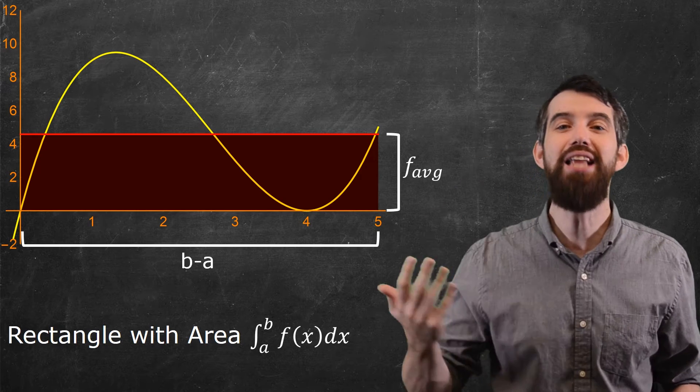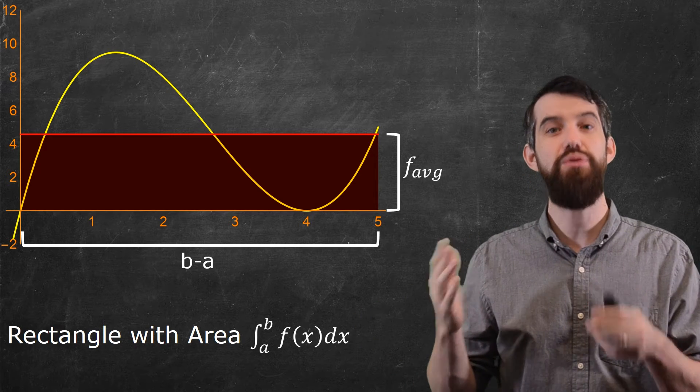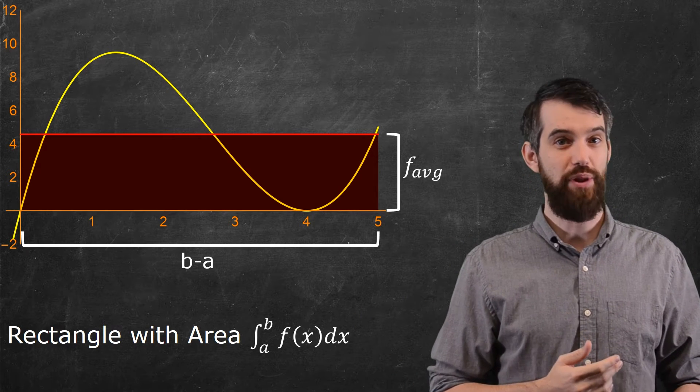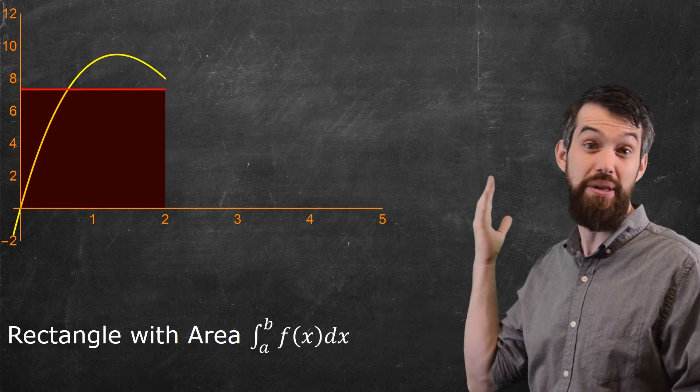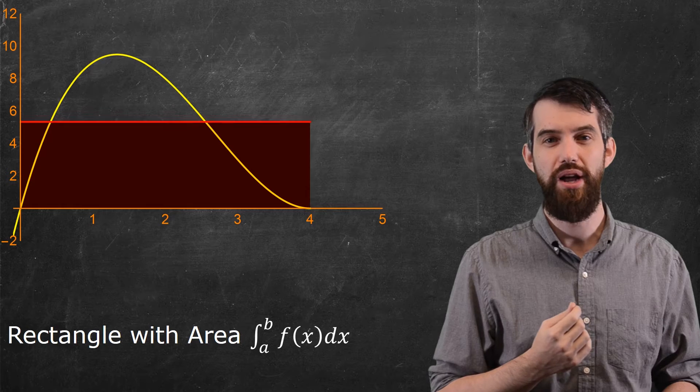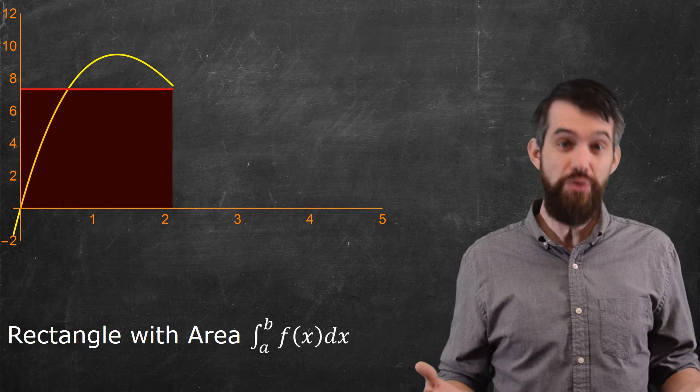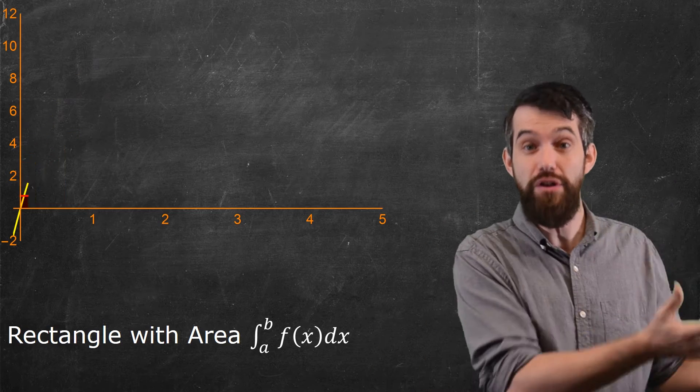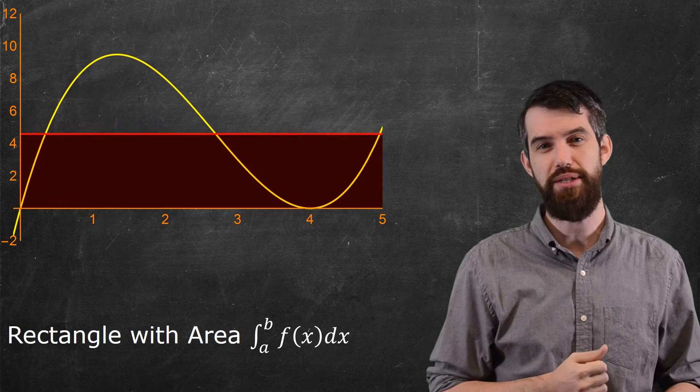Now, I want to note this is highly, highly sensitive on the a and the b. If you change the a and the b, you get very different values. So for example, if I animate this a little bit, what you can see is that as I take my, in this case, b value and move it along here, what the f average is changes. So you can't just say you have a function. You have to have a function on a particular interval to compute out whatever its average value is.